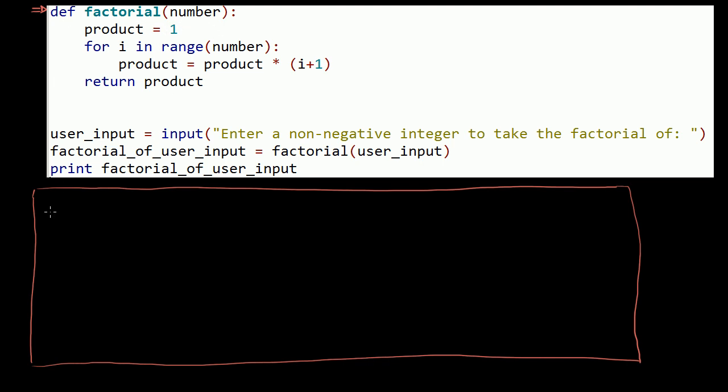the program will associate the name factorial with this whole function right over here. So right when it says define factorial, it'll actually associate factorial, the label factorial, I guess you could say it. It'll associate the label factorial with a function that looks like all of this business right over here.